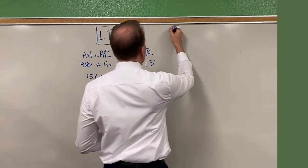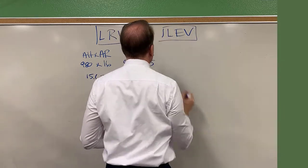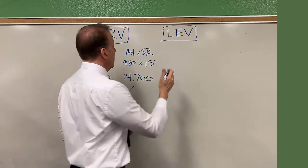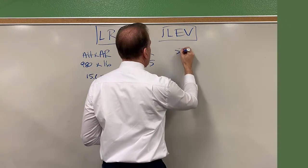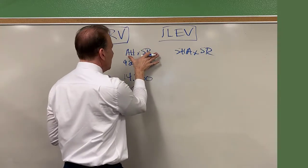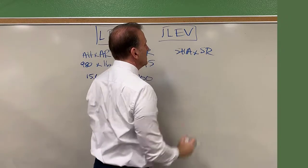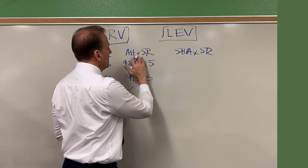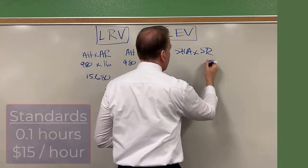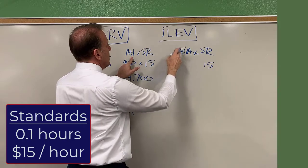Now let's move on to the labor efficiency variance. It follows the same pattern as our materials quantity variance — we're going to take standard hours allowed times the standard rate, and compare that to actual hours times the standard rate. The rate stays the same; what changes is the hours. That's the efficiency.